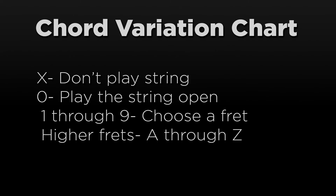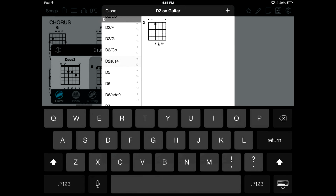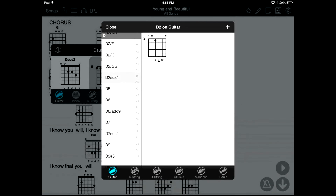Type X to not play a string, 0 to play the string open, or 1 through 9 to choose a fret. If you need to use higher frets, use A for 10, B for 11, and so on through Z. This gives you up to 36 fret positions. Tap Done to add the chord.